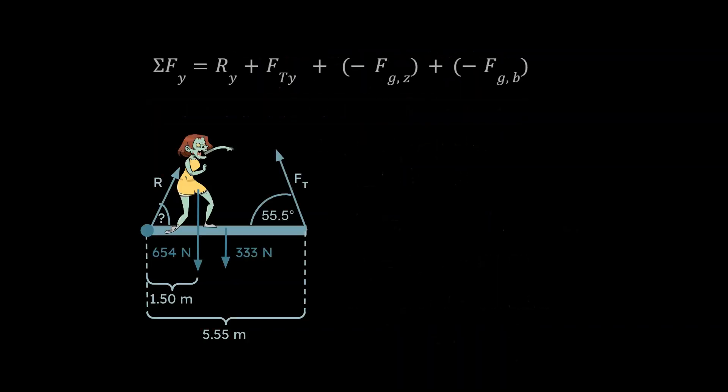We still need R in the Y. So let's do the sum of the forces strategy in the Y. Here we've got four forces in the Y axis. You've got an R in the Y, FT in the Y, force of gravity for the beam, and force of gravity for the zombie.